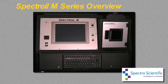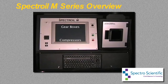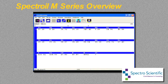Spectrometric oil analysis is applicable to any closed-loop lubricating system, such as those found in diesel and gasoline engines, gas turbines, transmissions, gearboxes, compressors, and hydraulic systems. The spectrometer analyzes the sample for trace levels of metal worn from moving parts, as well as for extraneous contamination and additive element levels.